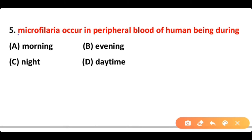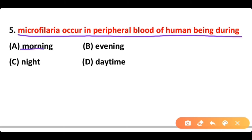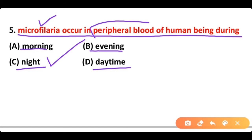Question 5: Microfilaria occur in peripheral blood of human being during: A) morning, B) evening, C) night, D) daytime. The correct answer is option C. Microfilaria occur in peripheral circulation during night time.